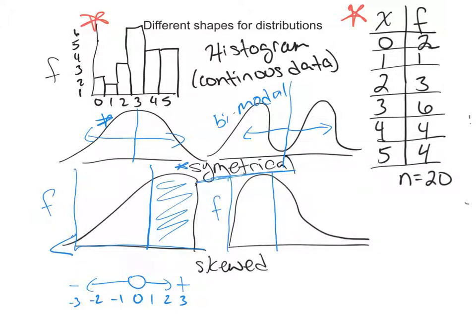A lot of the scores are piling up on the left-hand side, and the tail is tapering off to the right or towards the positive end of the number line. So we would say this one is a negatively skewed distribution, and this one is a positively skewed distribution.